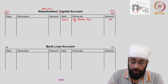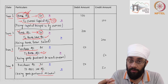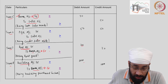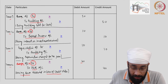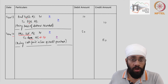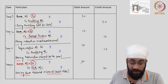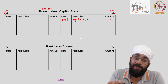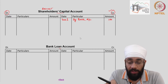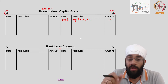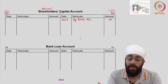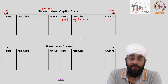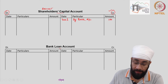Now let's look for other journal entries which may involve owner's capital account. Transaction two doesn't, three doesn't, four doesn't, five to eight — none, nine to twelve — none, thirteen and fourteen — none. So there is no other transaction involving owner's capital account. I intentionally kept a small space for this account because I knew there was only one transaction. In a real business, shareholders can bring in money regularly, so there can be more transactions. But for now, posting into shareholders capital account is finished.